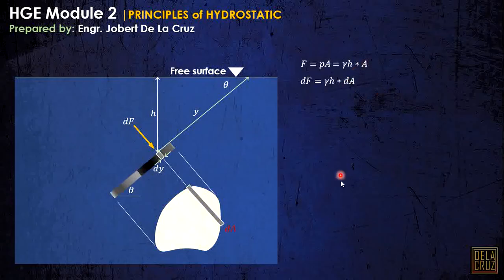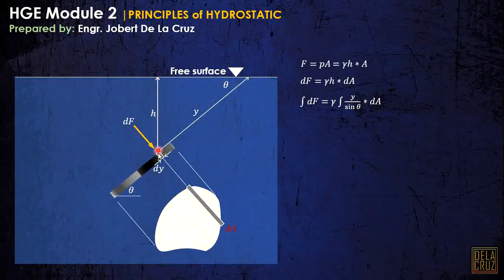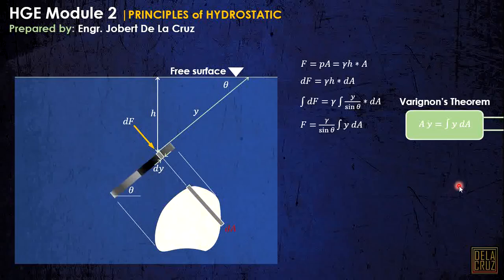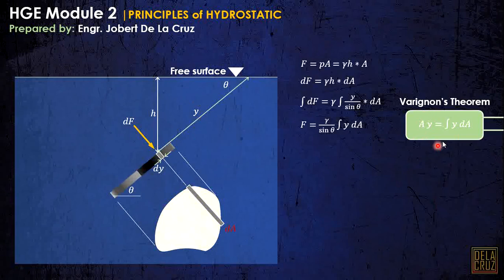Considering the differential force dF equals gamma times h times the differential area dA. Integrating both sides, gamma is brought out since it is constant. H can be expressed as Y over sine of theta, considering the right triangle formed. Integrating dF gives F, and sine of theta is also brought out as a constant. Note that the integral of Y dA is the first moment of area — that is the area times ȳ (Y-bar), where ȳ is measured from the centroid along the inclined plane to the free surface.